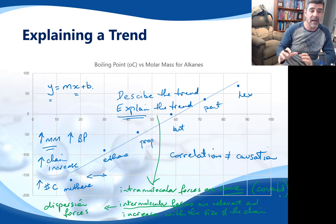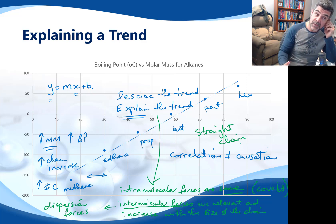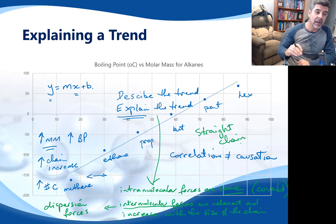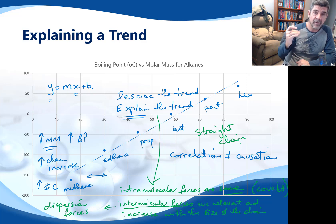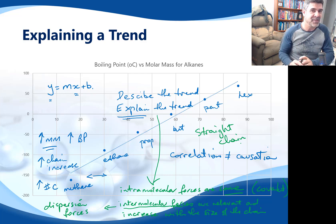It's important to have a look at lots of data. I've just looked at the straight-chain alkanes with no side branches — if you start to put side branches in, you might see some other interesting things as well. A useful exercise would be to plot the same boiling point values for the corresponding alkenes and alkynes — for ethene and ethyne, propene and propyne — and see how the boiling points change relative to the alkanes. See if you can explain those trends too, applying your understanding of structure and bonding to properties. Thanks for watching.